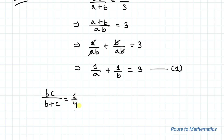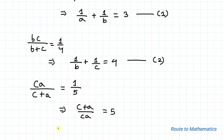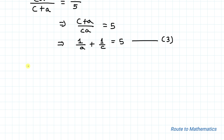We have bc divided by b plus c equals 1/4. Similarly, taking the reciprocal gives us 1/b plus 1/c equals 4 — let's take this as equation 2. And the third equation: ca divided by c plus a equals 1/5, which implies 1/a plus 1/c equals 5. Let's take this as equation 3.